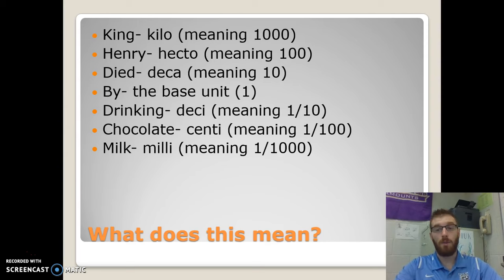Bi stands for one or the base unit, and that's generally what you'll use here. Drinking stands for deci, which means one-tenth. Chocolate means centi, meaning one one-hundredth, and milk meaning milli for one one-thousandth.